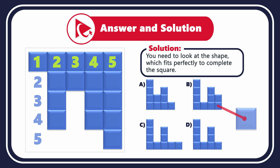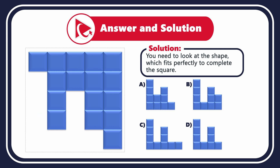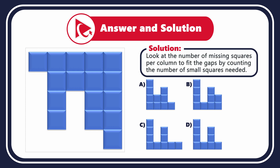One of the best ways to do it is to break the large square into columns and then look at how many small squares are missing per column. For the leftmost column, 4 small squares are missing. For the second column, 1 is missing. Then 3 are missing. Then 1 is missing. For the fifth column, no squares are missing.